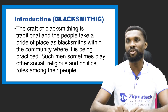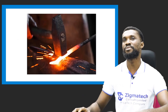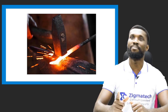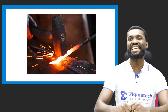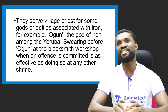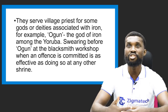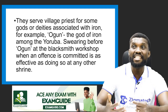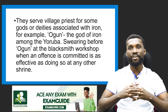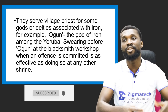People take pride or place as blacksmith within the community where it is practiced. Such men sometimes play other social, religious, and even political roles among their people. They serve as village priests for some gods or deities associated with iron — for example, Ogun, the god of iron among the Yoruba. Swearing before Ogun at the blacksmith workshop when an offense is committed is as effective as doing so at the shrine itself.